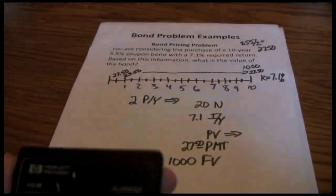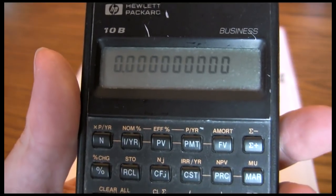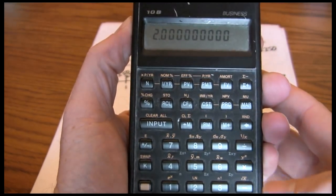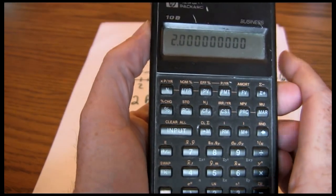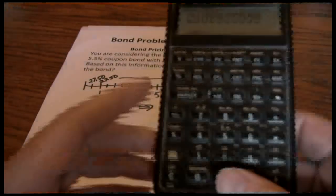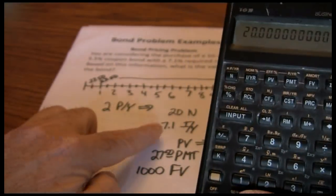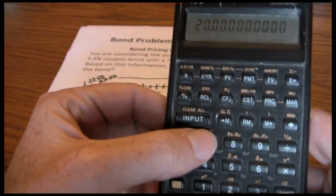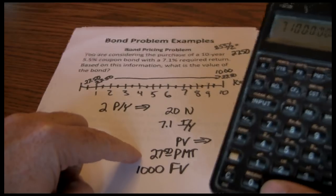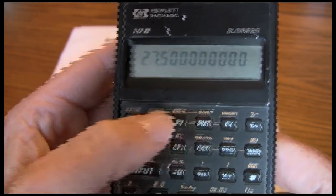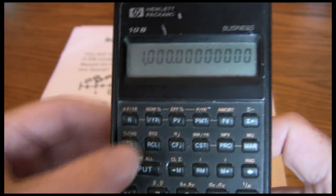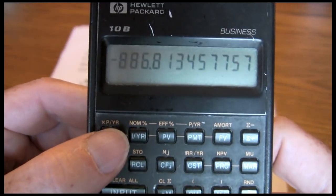So now we get out our financial calculator. I want to start by setting my periods per year to two. So I do 2, set that into my periods per year. Again, that procedure might be a little different depending on what calculator you're using. But the key is we start with two periods per year. Once our calculator is set to two periods per year, we're going to use our five-key approach. My N was 20, so just plug that into my N. My interest rate is 7.1%, just plug that into my interest per year. Present value is what I'm solving for, so skip over that for now. $27.50 is my payment. And $1,000 is my future value. Once those are all into my calculator, just solve for my present value. We get an answer of $886.81.